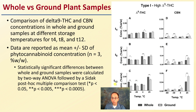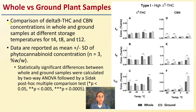Whole versus ground plant samples is one thing the study looked at. This comparison of Delta-9 THC and CBN concentrations in whole and ground samples at different storage temperatures for four, eight, and 12 months is presented here. We see relatively similar results, and what we notice at one year looking at Delta-9 THC is that the 25 degrees Celsius temperature seems to have the greatest degree of breakdown.